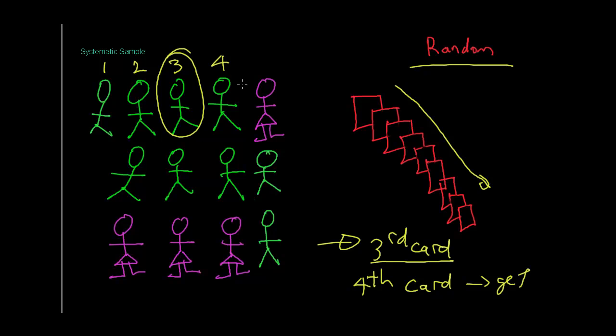And then what we'd do is we'd go through and get the fourth one after that. One, two, three, four. So we'd grab that one there and then we'd keep on repeating it. This is called systematic because it's a system that we are following until we get our sample size.